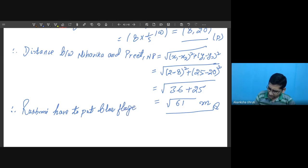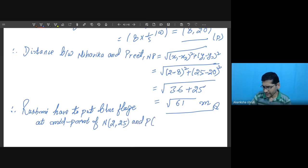Rasmi have to put blue flag at midpoint of Niharika and Preet, flag at midpoint of Niharika, I am denoting it is 2, 25, and Preet P, I am denoting it is 8, 20.